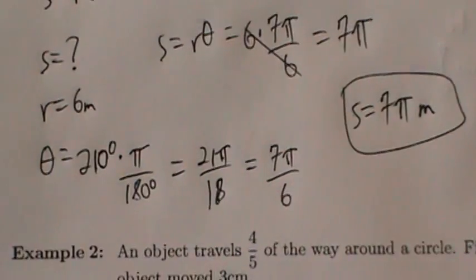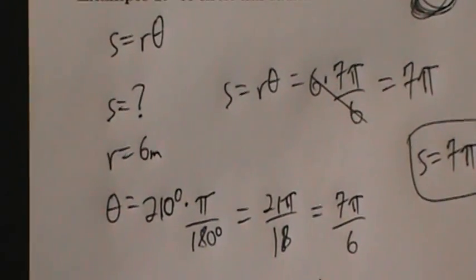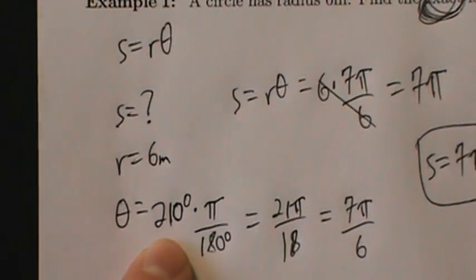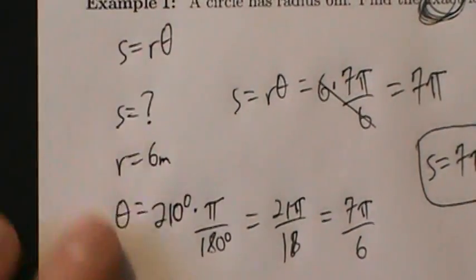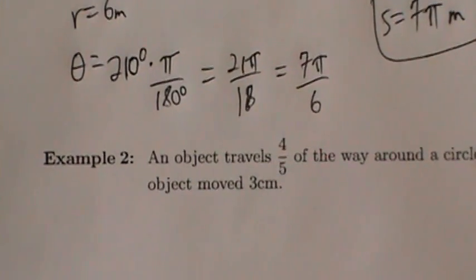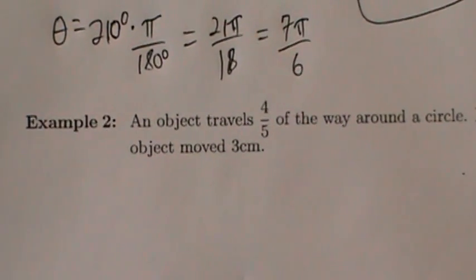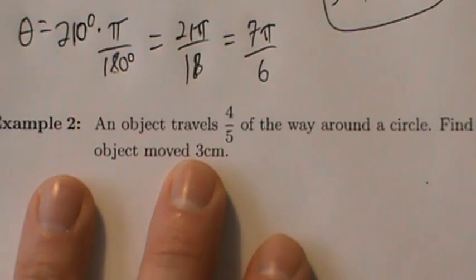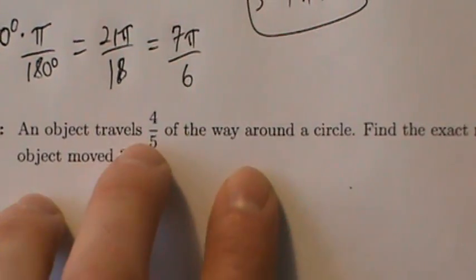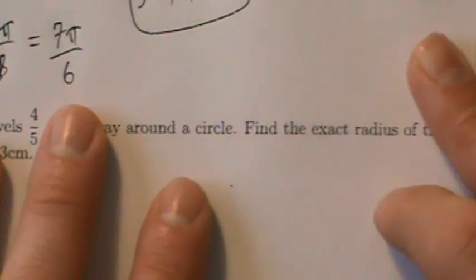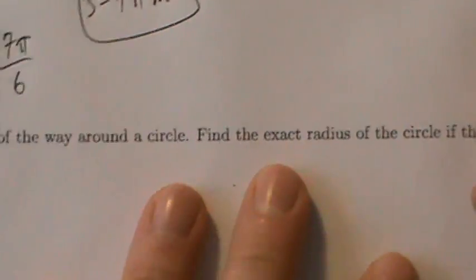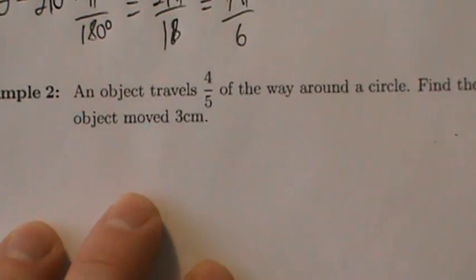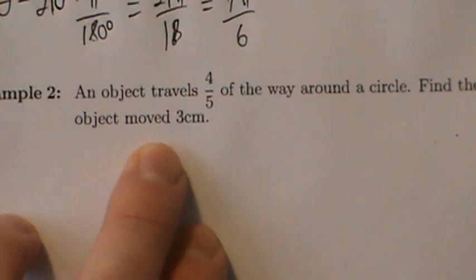Pretty straightforward — the only thing we had to keep in mind was converting degrees to radians before using the formula. So example 2 is a little trickier. An object travels 4/5 of the way around a circle. Find the exact radius of the circle if the object moved 3 centimeters.